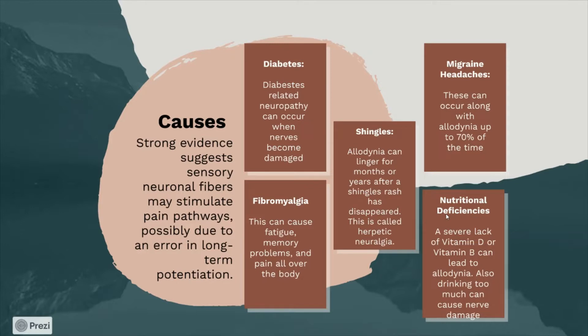Diabetes-related neuropathy can occur when nerves become damaged. Fibromyalgia can cause fatigue, memory problems, and pain all over the body. Shingles: allodynia can linger for months or years after the shingles rash has disappeared — this is called herpetic neuralgia.